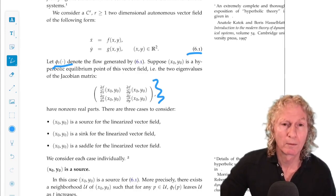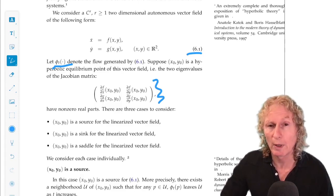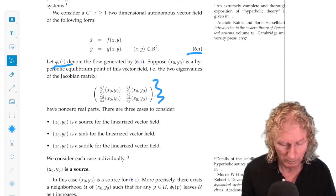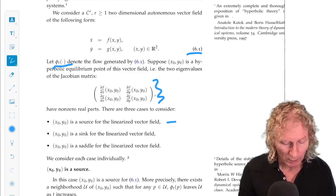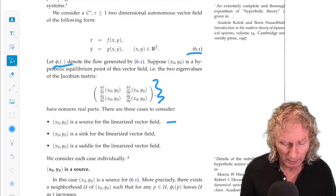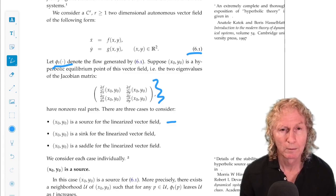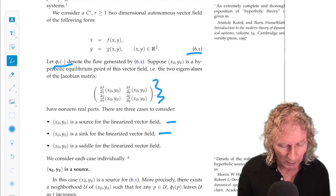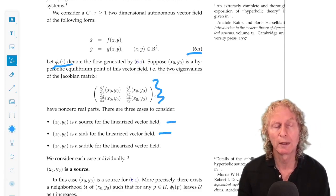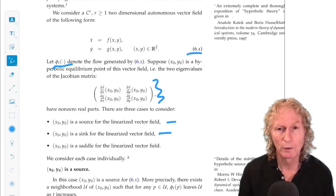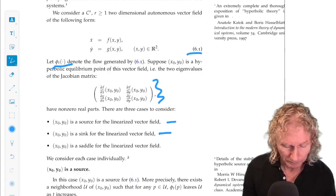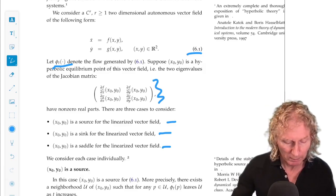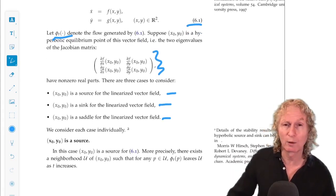The vector field is a source for the linearized vector field, so both eigenvalues of the Jacobian have positive real part. (x_0, y_0) is a sink for the linearized vector field, so both eigenvalues have real parts negative. And the last case is, if (x_0, y_0) is a saddle for the linearized vector field, both eigenvalues are real and opposite in sign. And we're going to look at each case individually, the source, the sink, and then the saddle we're going to spend a lot more time on.